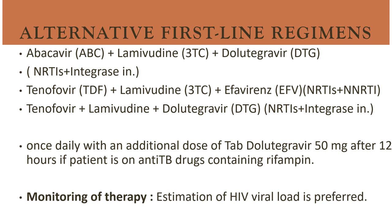Alternative first-line regimens, when first-line drugs cannot be used, are: abacavir, lamivudine, and dolutegravir; or tenofovir, lamivudine, and efavirenz; or tenofovir, lamivudine, and dolutegravir. These three-drug combinations are used in daily doses. An additional tablet of dolutegravir 50 mg can be added if the patient is on antitubercular drugs containing rifampicin, and viral load monitoring is required.